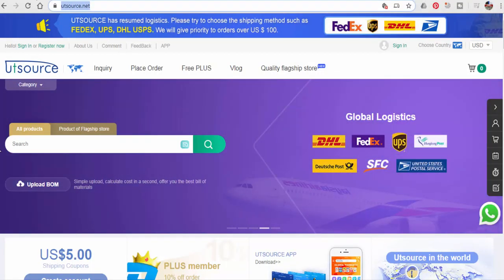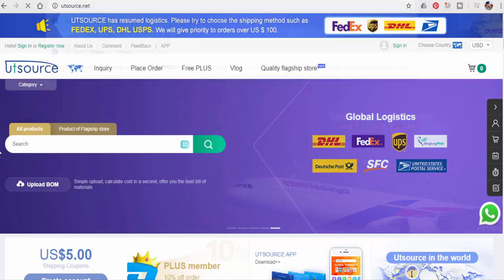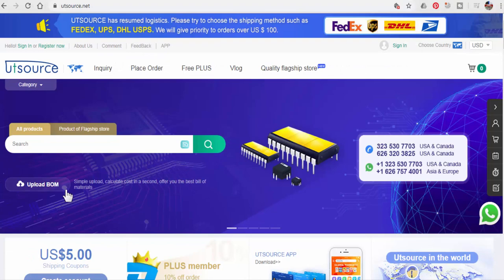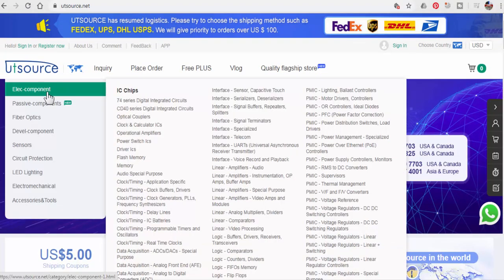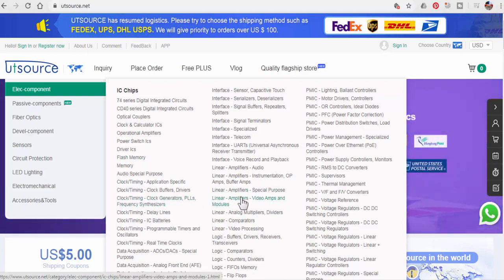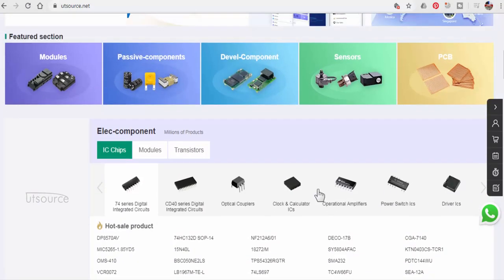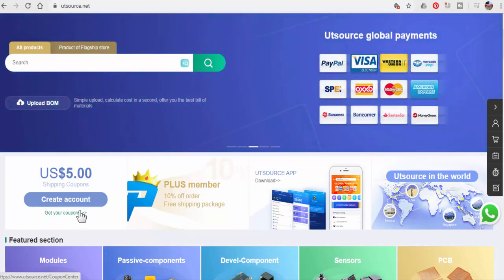So now we are here. You will type utsource.net. When we come here we find the best interface to search all type of components, electronic components. You can see 74 series, CD-40 series, operational amplifiers, devices, clock timing, buffers, drivers, line drivers, linear amplifiers. Everything we find here. It's very nice, memory ICs.